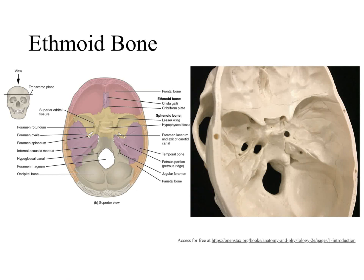Looking at the superior view of the skull, we can see the ethmoid bone, which is anterior to the sphenoid bone. The ethmoid bone has several bone features, including this little triangular structure.